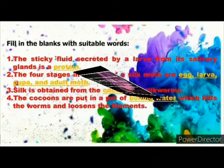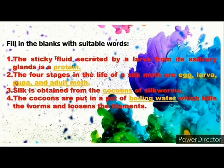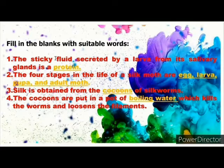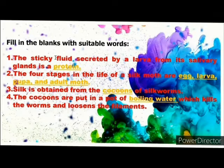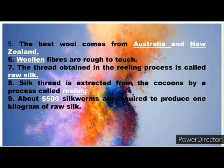Fill in the blank: The sticky fluid secreted by the larvae from the salivary gland is Protein. The first stages in the life of the silk moth are Egg, Larva, Pupa, and Adult moth. Silk is obtained from the Cocoons of silkworm. The cocoons are put in a pot of Boiling water, which kills the worm and loosens the filament. The best wool comes from Australia and New Zealand.